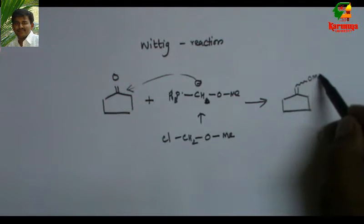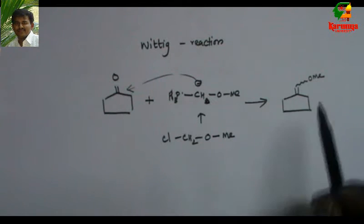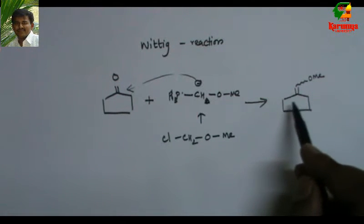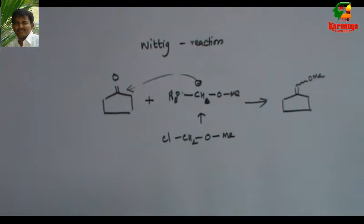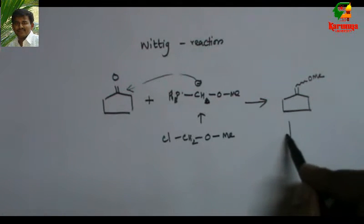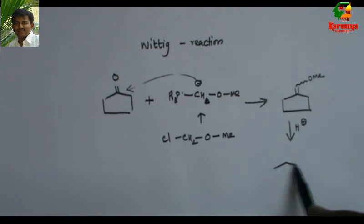When this anion attacks here, you get the Wittig product. The stereochemistry may be any direction. In this case it doesn't matter. In the case of substituted ketone it may be cis or trans. But in this cyclopentanone, since both are same, it doesn't matter.